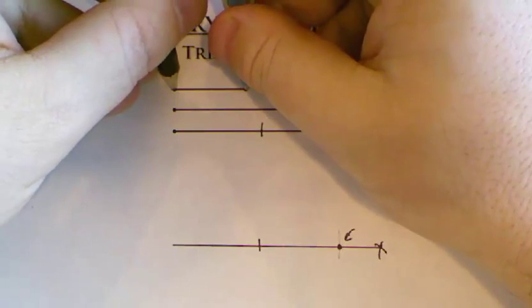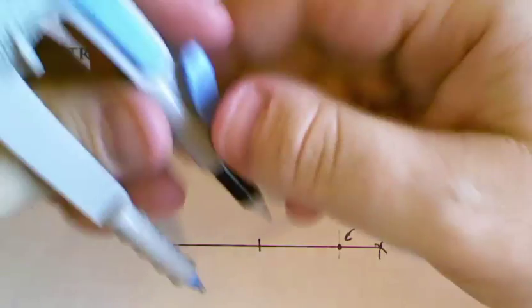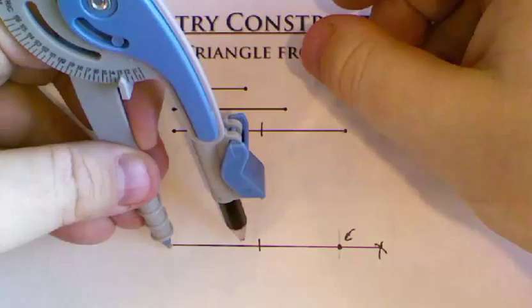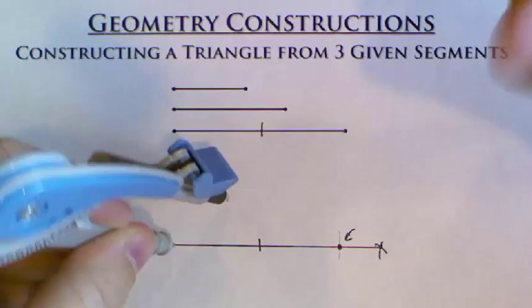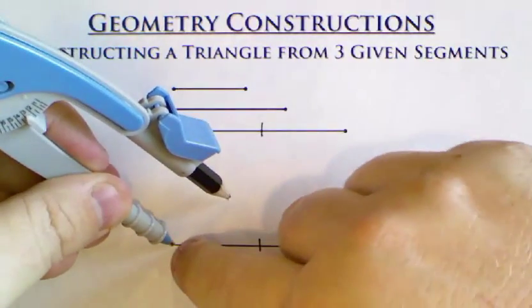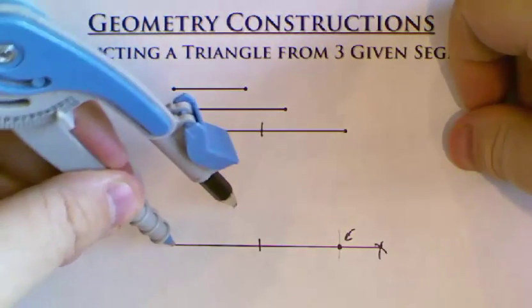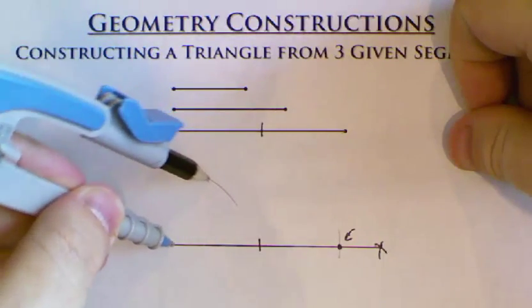So I'm going to open up my compass to be the size of the small end segment. And I'm going to come over here. And if I attach the small side to this endpoint, like if it was a thin piece of wood or something, and I attach it to the side of my triangle, I know that the endpoint is going to end up somewhere along this arc.